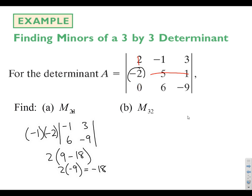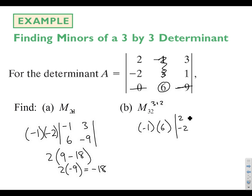Let's do minor M32. Third row, second column. We cross out everything in the same row and column. Since 3 plus 2 is odd, we'll have a negative one out front. M32 starts with 6, and the remaining matrix is 2, negative 2, 3, and 1. So we'll have negative 6 times the determinant: 2 minus negative 6, giving negative 6 times 8, which is negative 48. That is minor M32.